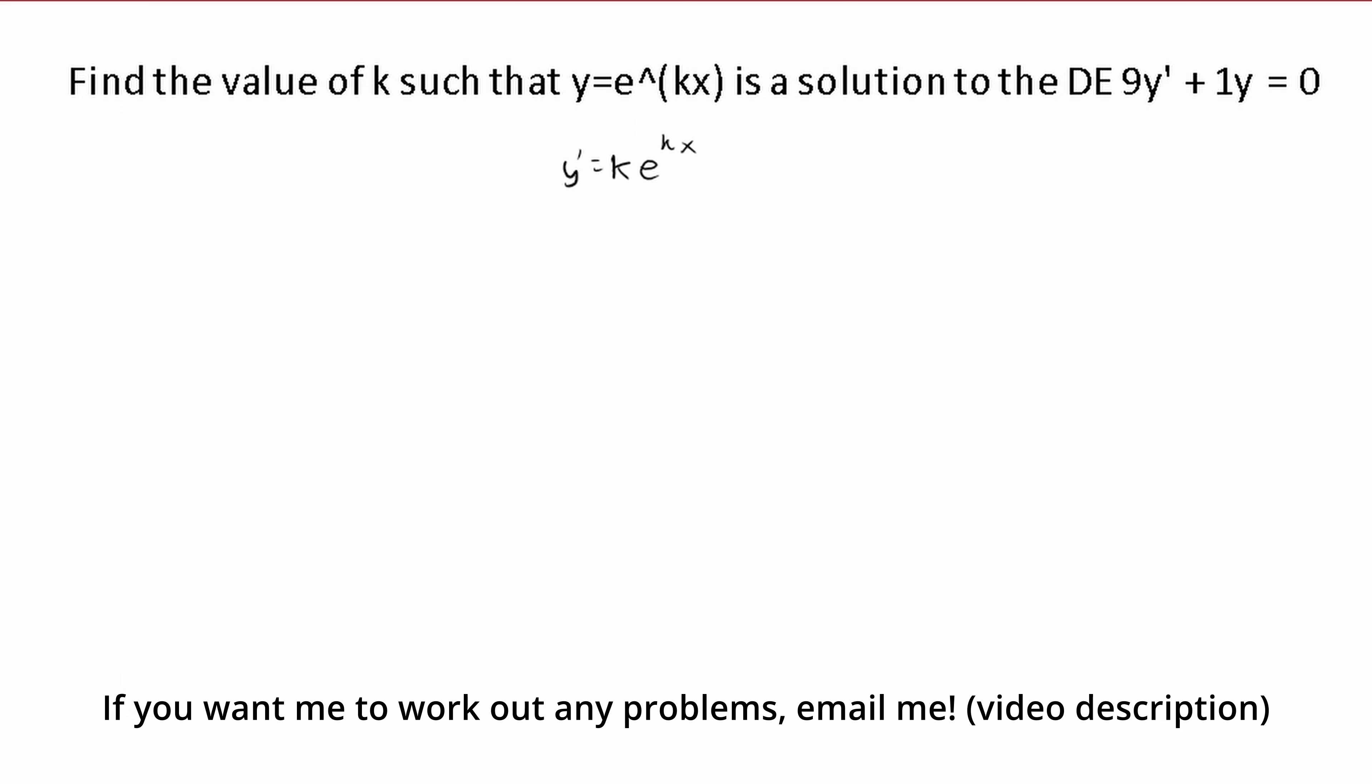Let's plug this in now and try to solve. We have 9 times k·e^(kx) plus e^(kx), that's just plugging in y prime and y here, and it equals 0.